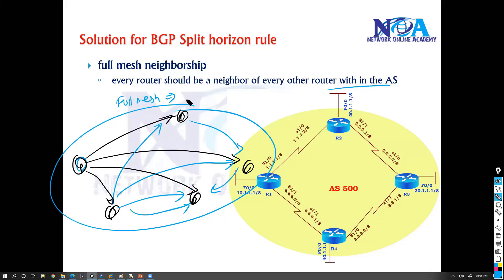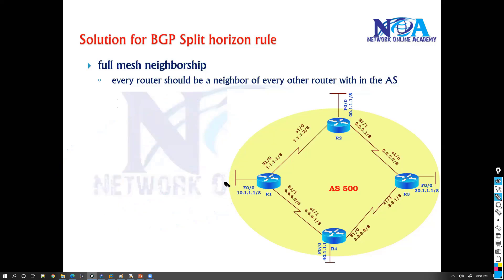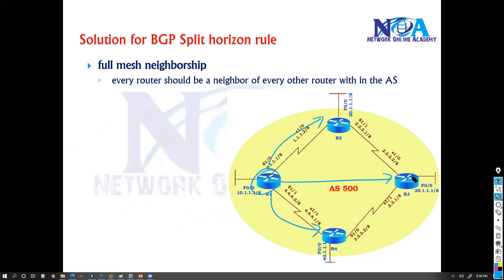Of course, this full mesh is not really a good option in a service provider network because maybe in the service provider you might be running 20 to 30 routers. So there is an alternate solution called route reflectors. But mostly from the customer point of view, you might be running BGP on maybe two or three routers, so full mesh won't be a problem. Full mesh means router one will send updates directly to router two, router four, and router three.